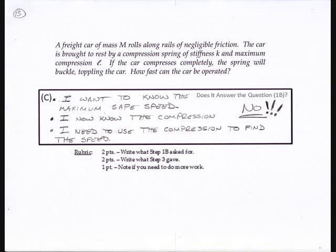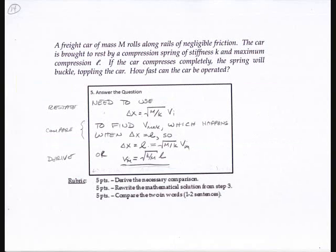Now I check: does it answer the question from part 1b? No — I solved for the compression delta x, not the maximum safe speed. So I need to state what was asked, what was found, and what still needs to be done. I take the solution delta x = sqrt(M/K) · v, set delta x equal to the maximum compression L, and solve for v. That gives the maximum safe speed. So I use the compression result to find the maximum safe speed.